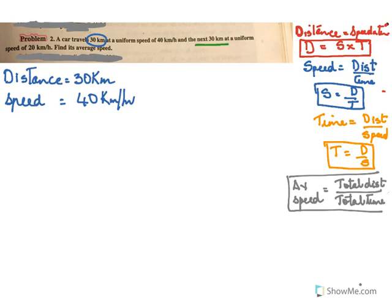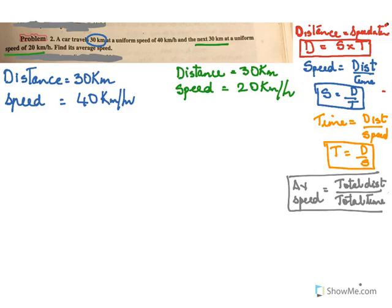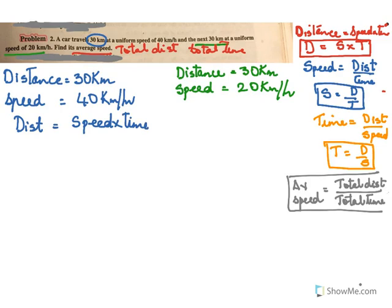For the next distance of 30 kilometers, it travels with the speed of 20 kilometers per hour. So we have to find the average speed. For average speed we need to know two things: total distance and total time. In the first section, distance is 30 kilometers and speed is 40 kilometers per hour.